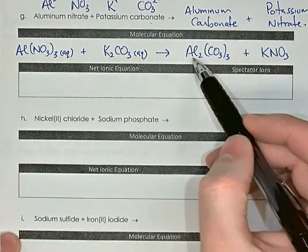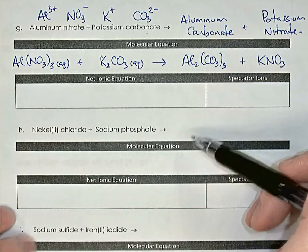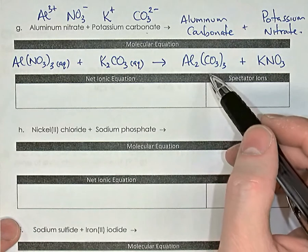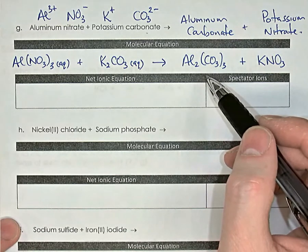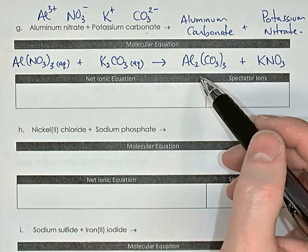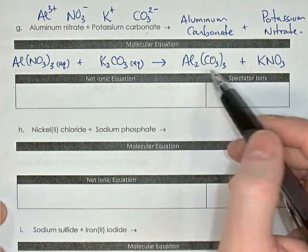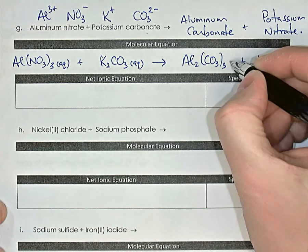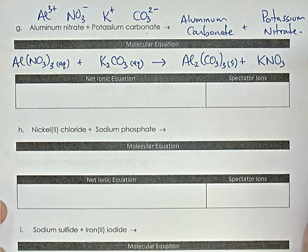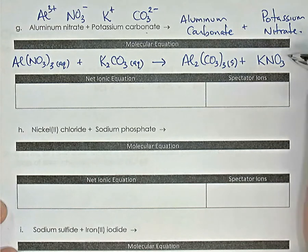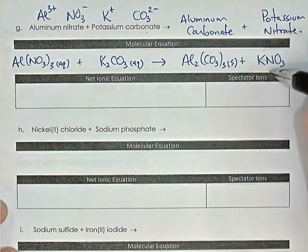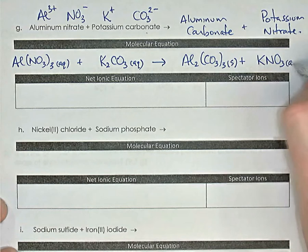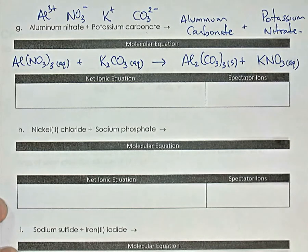Looking at aluminum carbonate, the solubility rules say carbonate salts are not very soluble unless bonded to alkali metal or ammonium cations. Aluminum carbonate is therefore not very soluble — it's a solid precipitate in this reaction. Potassium nitrate, by our first and second rules, has an alkali metal and has nitrate, so by either rule it's highly soluble — aqueous, dissolved in water.